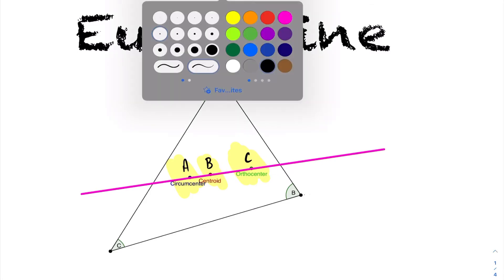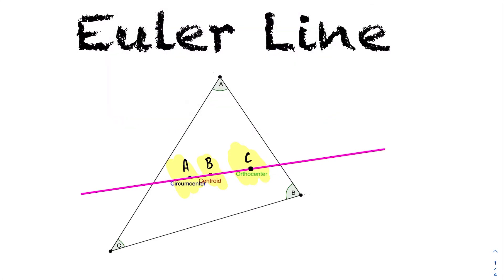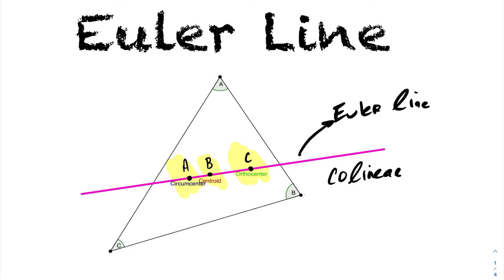What we have here is your orthocenter, your centroid, and your circumcenter — they all lie in the same line. This line is called the Euler line. These three points, the three centers of the triangle, you would say they're collinear. Collinear means they just lie in the same line.